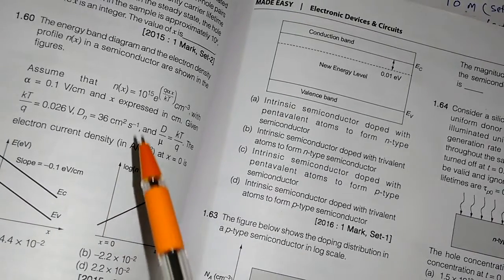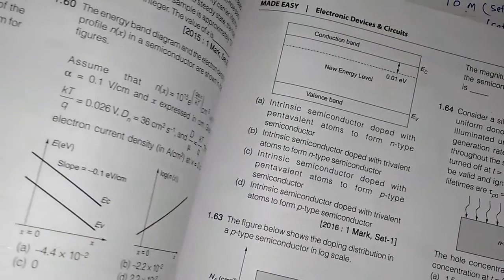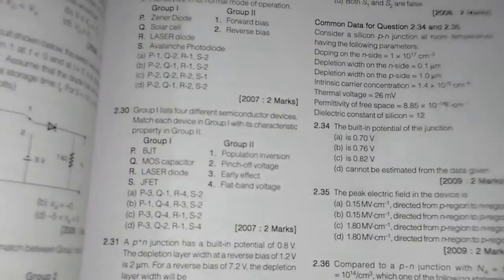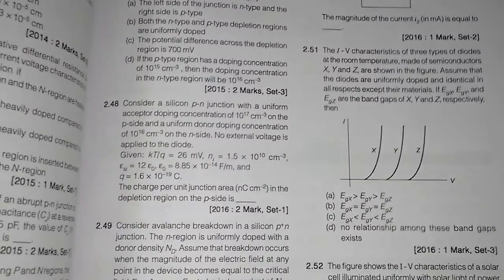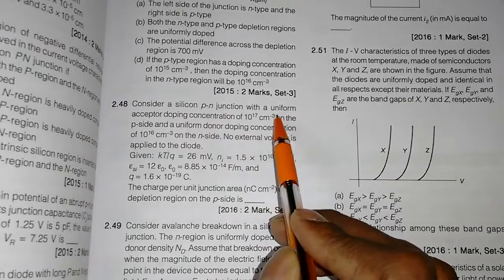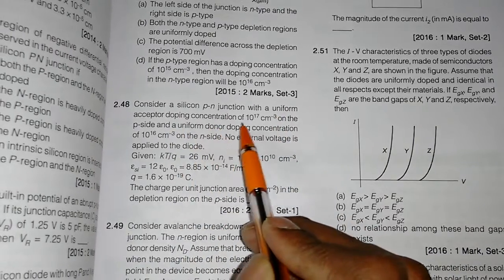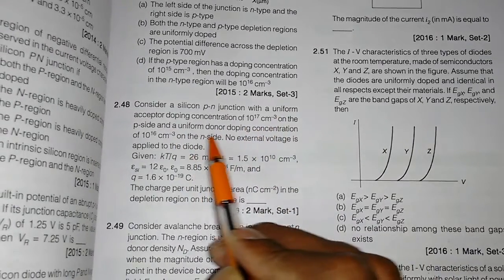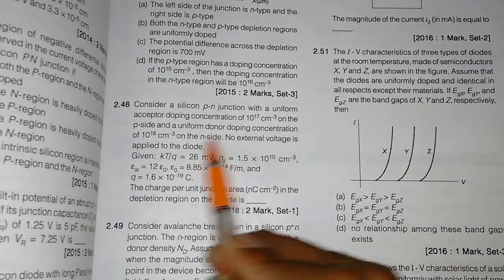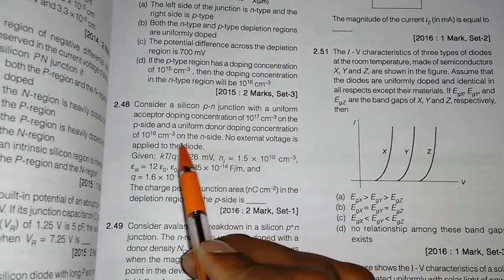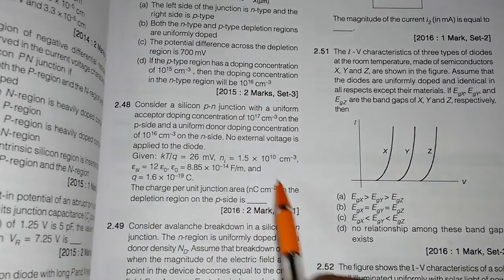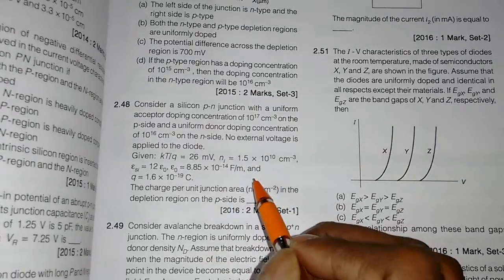Similarly, if we go to BJT concept in the previous paper, see this question: Consider a silicon PN junction with uniform acceptor doping concentration Na is given on the p-side and uniform donor Nd is given. Then external voltage is applied, so find the charge per unit junction area.